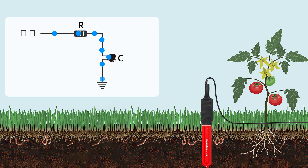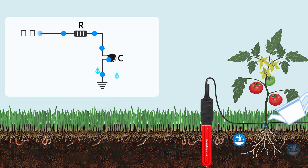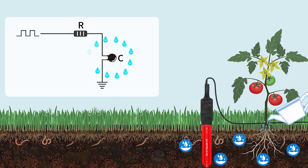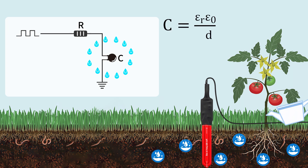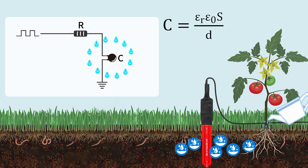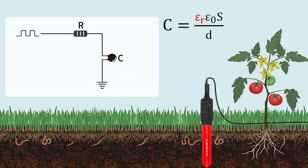which changes the capacitance values of the capacitor. When soil moisture increases, water molecules fill the voids in the soil, causing a significant increase in the dielectric constant and then increasing the capacitance value.